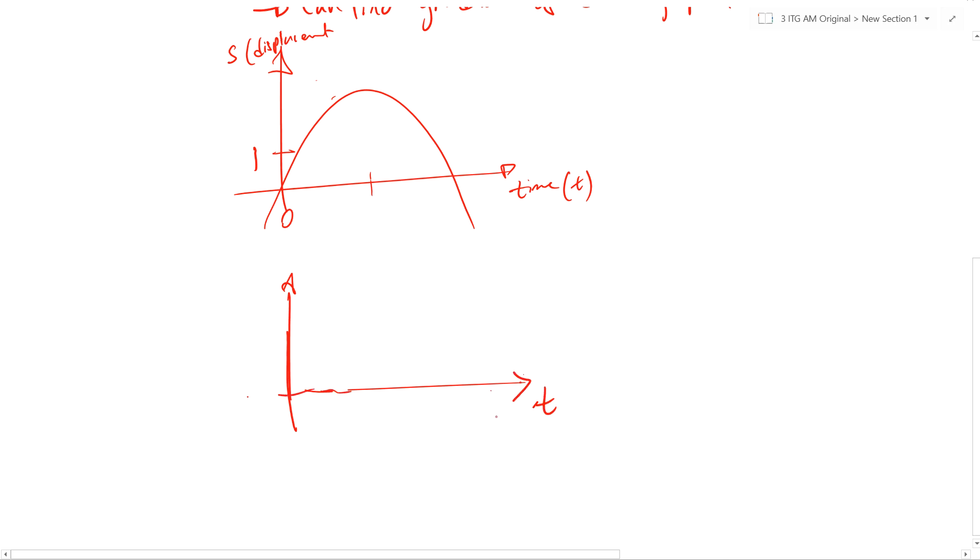Okay, so now, our first graph is our displacement time graph. The second graph is our velocity time graph. Okay? Based on this graph, all the gradient, I'm going to transfer it down over here. Now, when time goes to 0, what is the gradient?